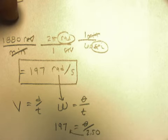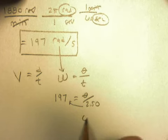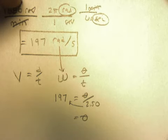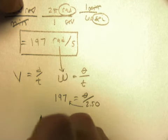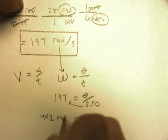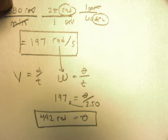So you multiply across, and you end up with theta equals 492 radians. And that's part B.